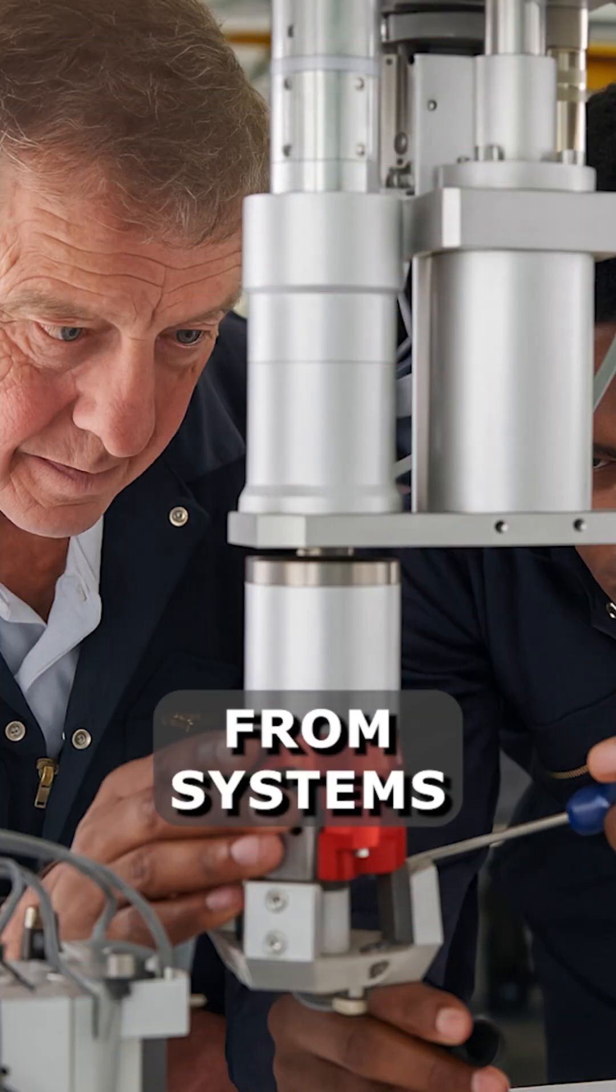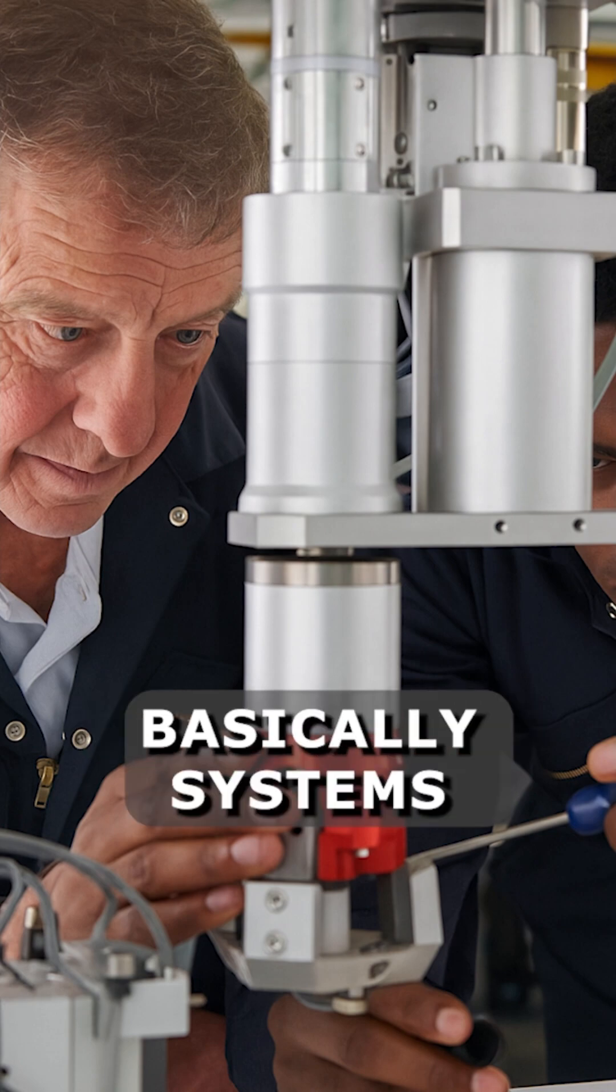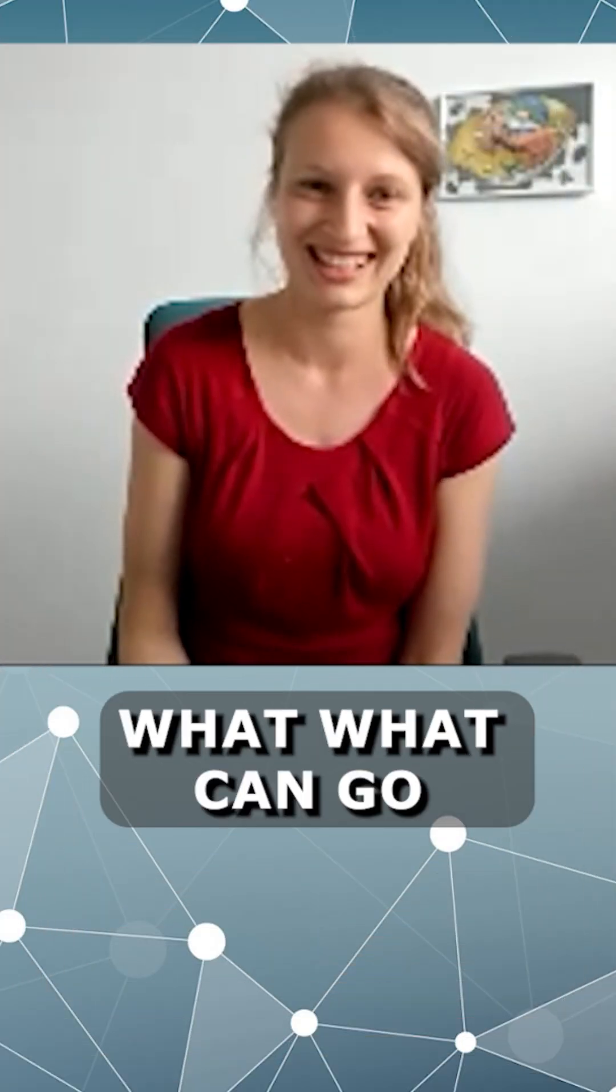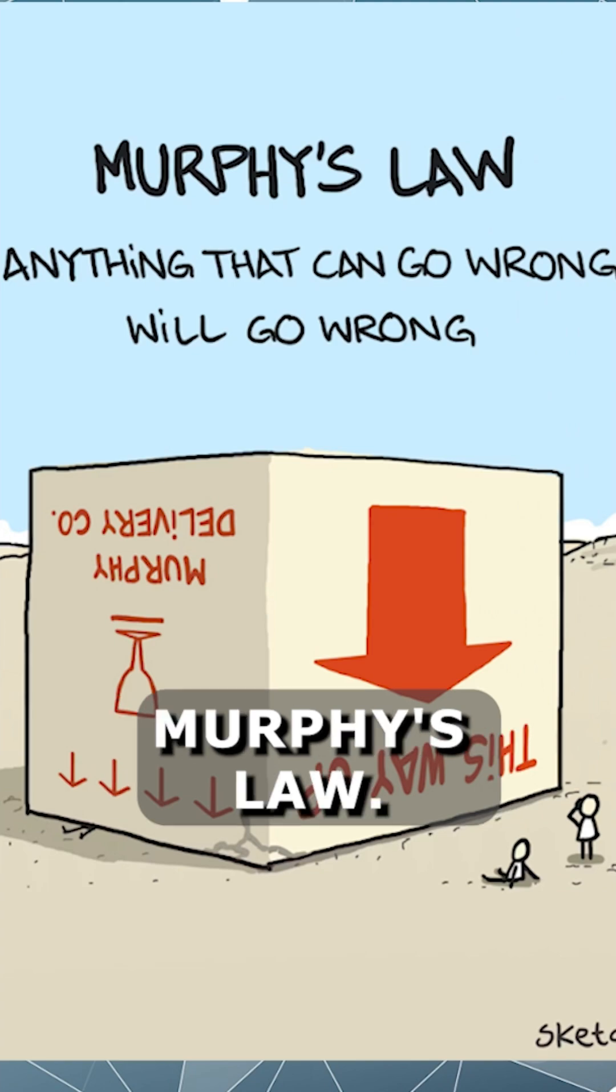So it's also a message from systems engineering that basically systems in general work poorly or not at all. So basically what can go wrong will go wrong according to Murphy's law.